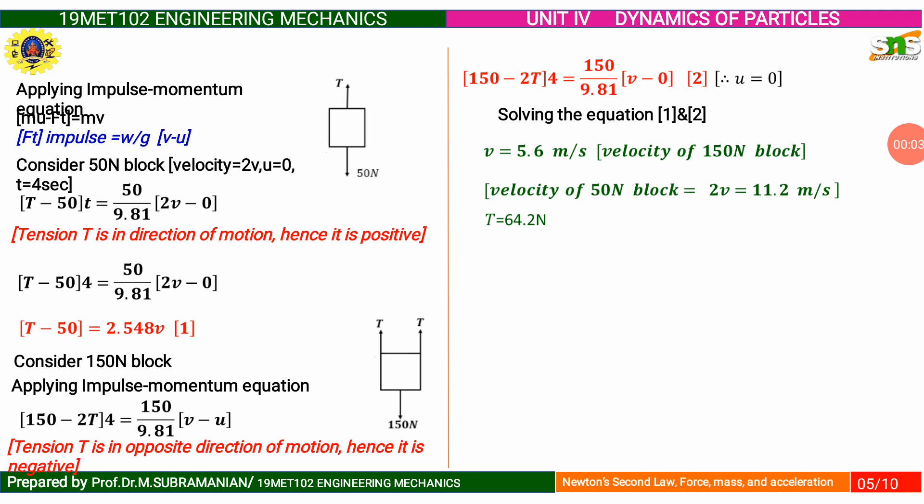Considering the other block, apply the impulse-momentum equation. For this block, tension is opposite to the direction of motion, hence negative. Formulating the second governing equation: 150 minus 2T into 4 equal to 150 divided by 9.81 into V minus 0. Solving the two equations, the velocity V equals 5.6 meters per second. Velocity of the 50 Newton block is 2V, equal to 11.2 meters per second. Tension in the string T equals 64.2 Newton.